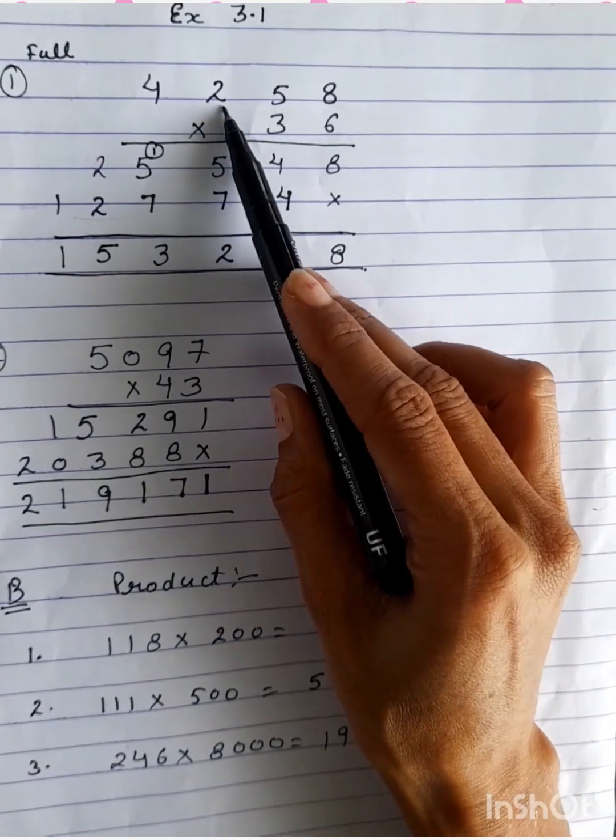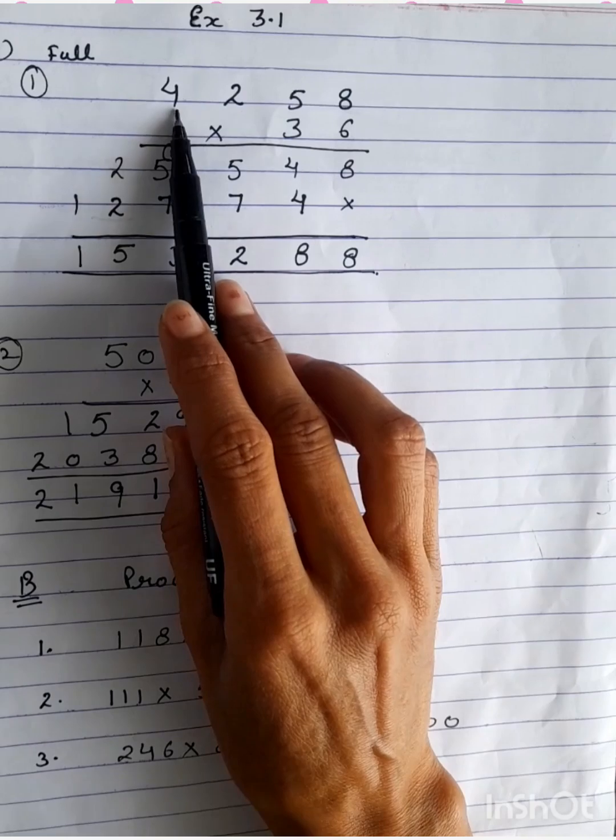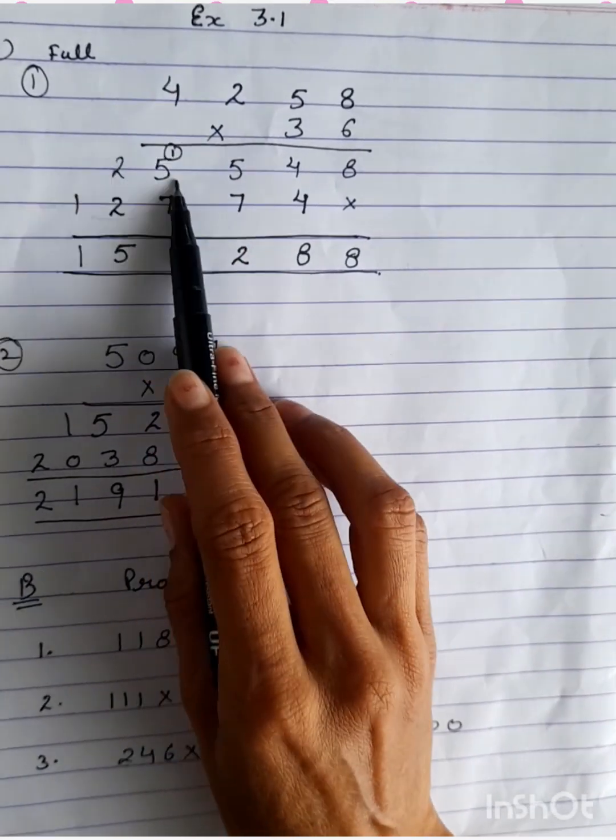6 times 2 is 12. 12 plus 3 is 15. 1 carry again. 6 times 4 is 24, plus 1 is 25.